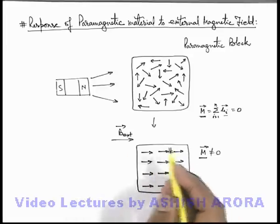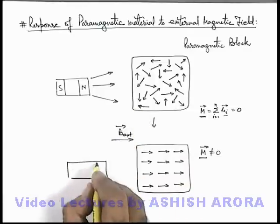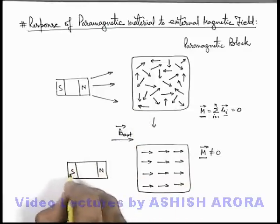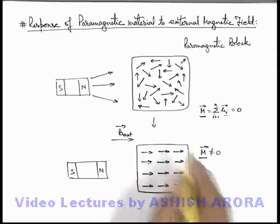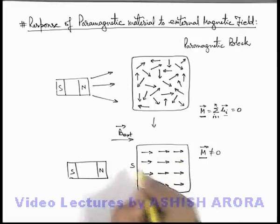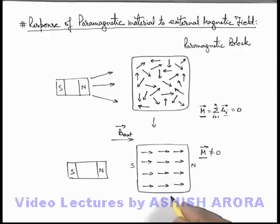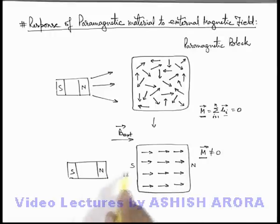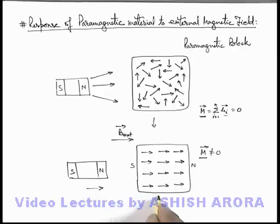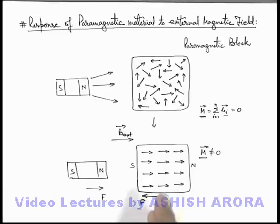This total magnetic moment will be in the direction of the external magnetic field. So here, if this is the source of the external magnetic field with north-south poles, and for this block the overall magnetic moment is toward the right, then the left side of this block will behave as a south pole and the right side will behave as a north pole. Due to opposite poles facing each other, the magnet will experience an attractive force, and the block will also experience an attractive force towards each other.